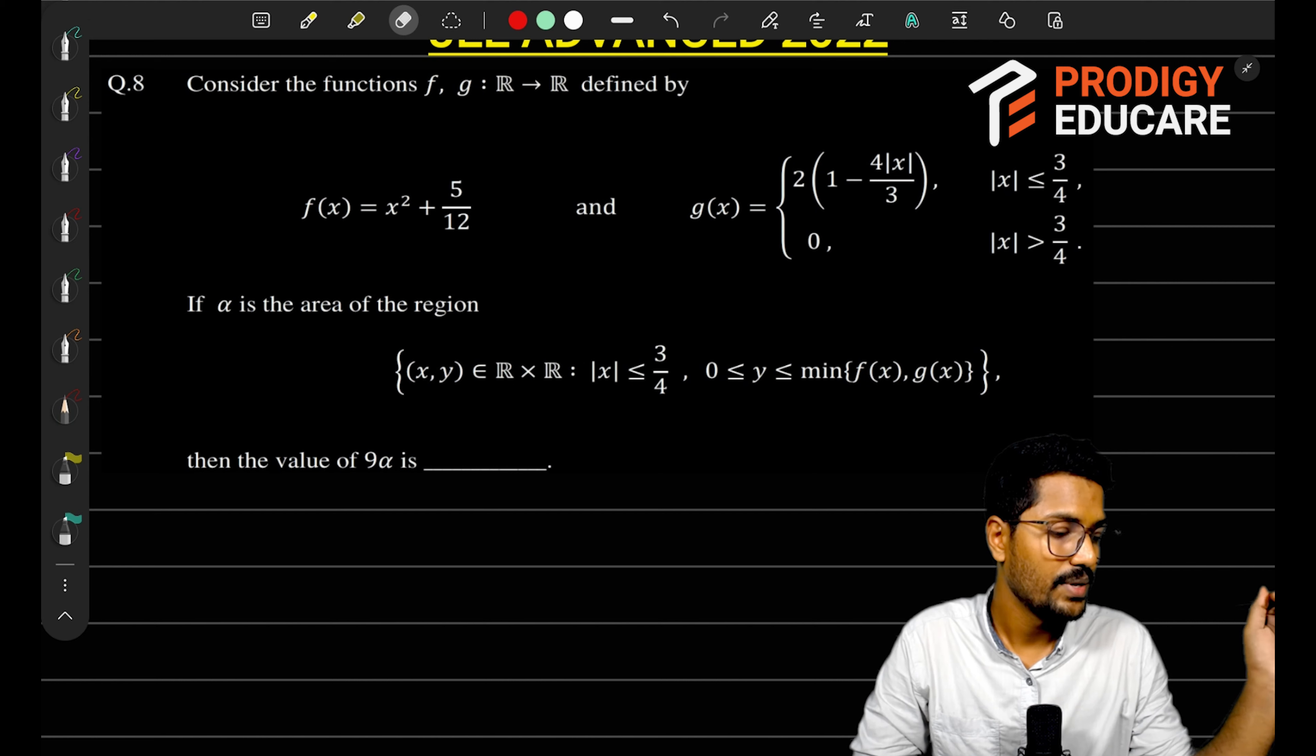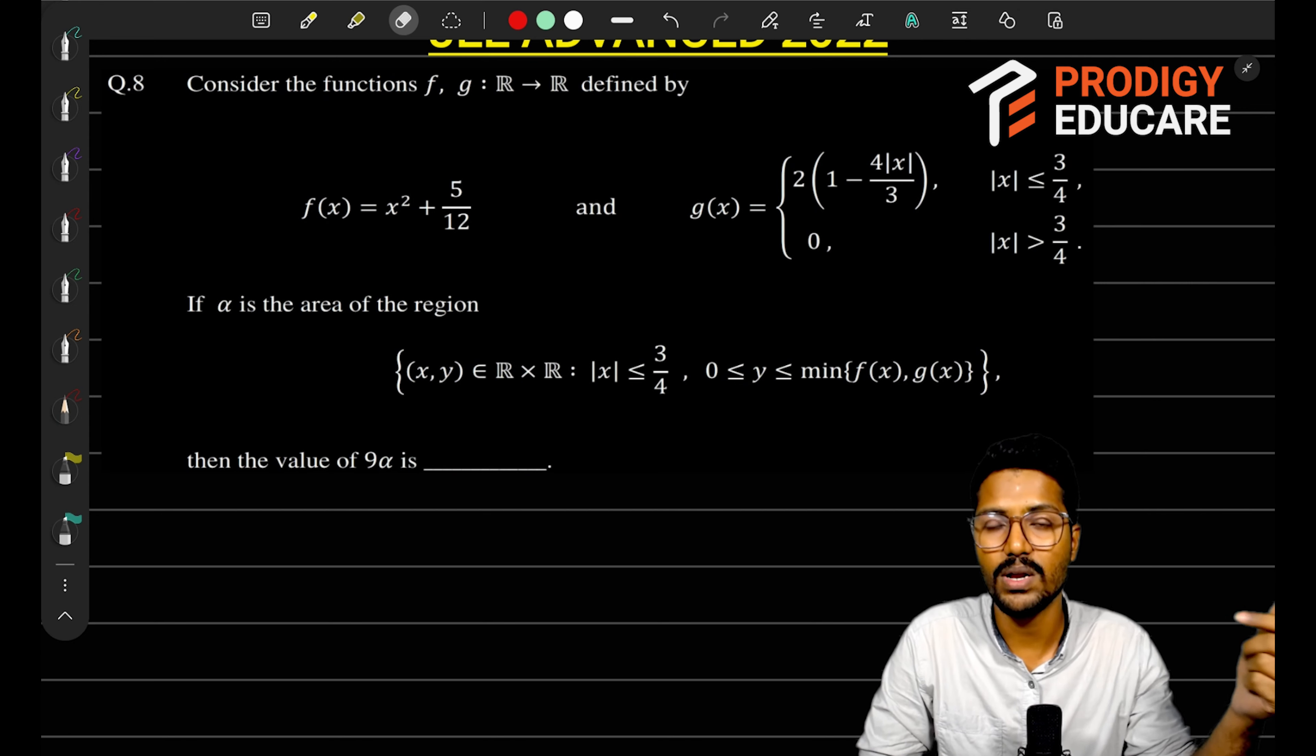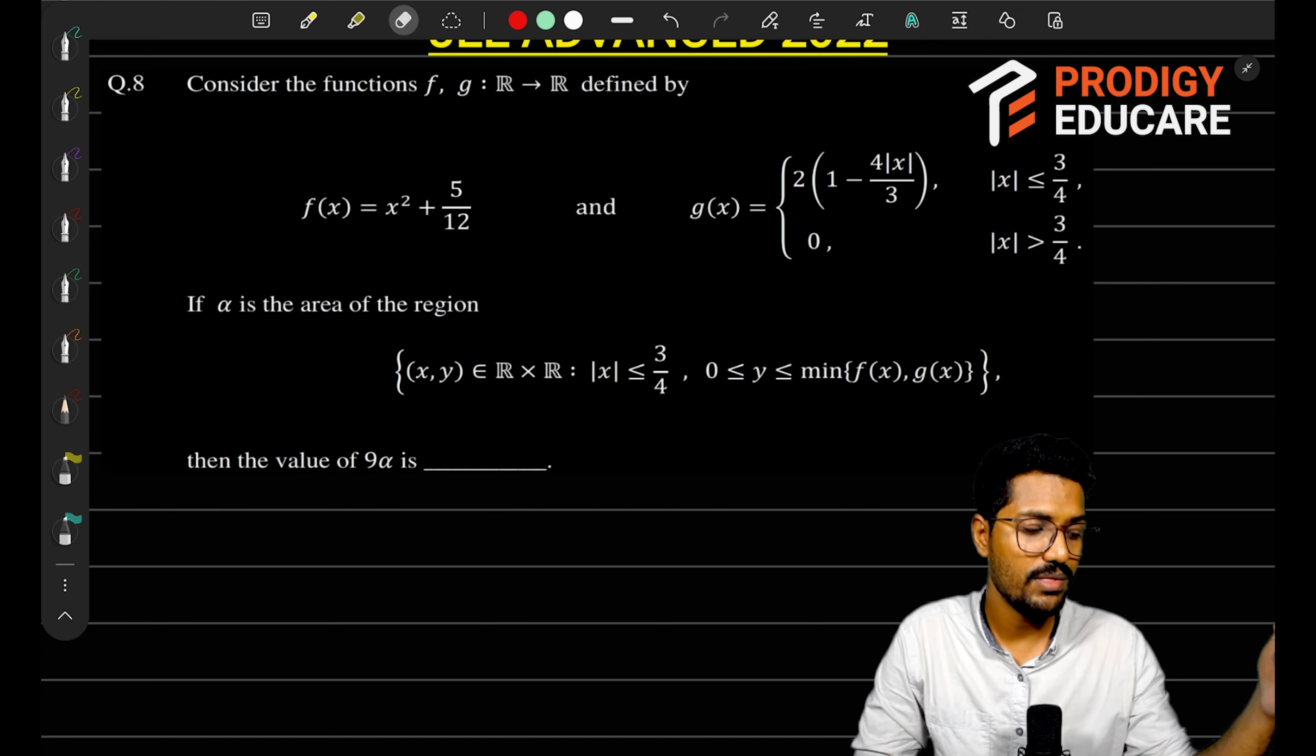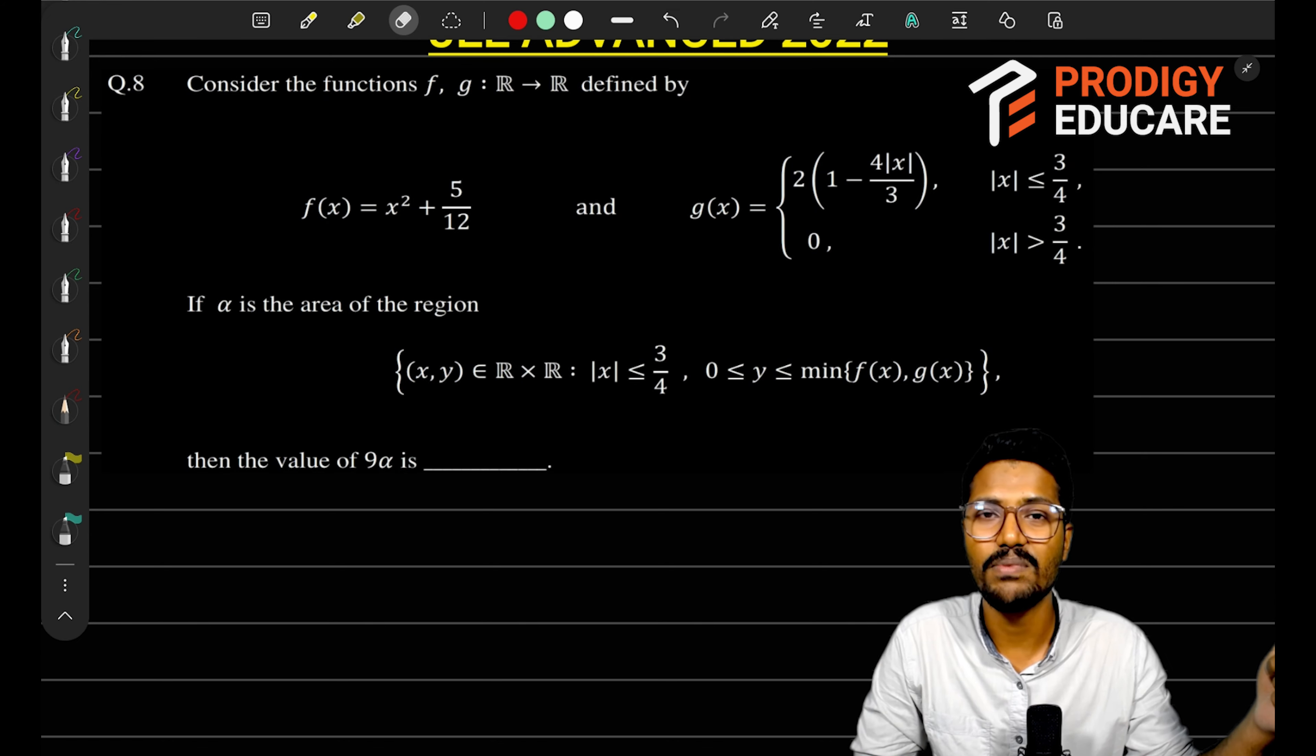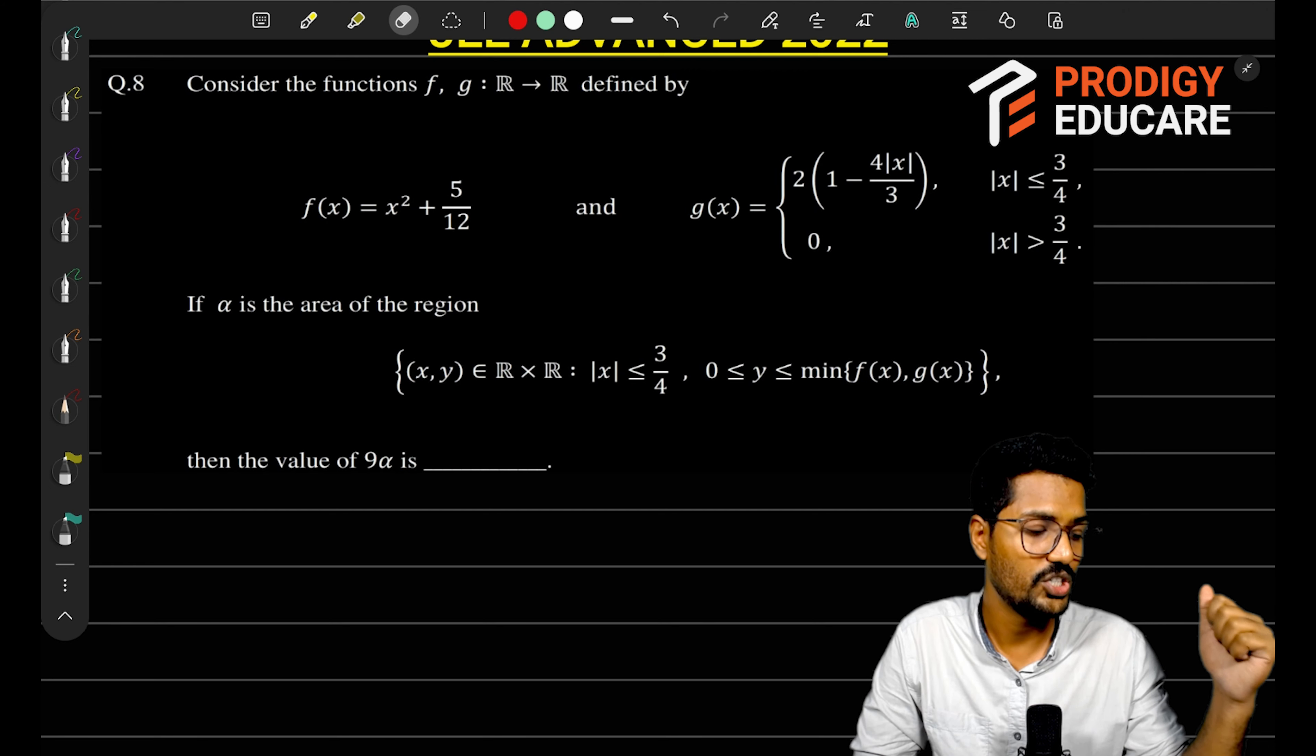Consider the functions f(x) and g(x), and we want to find the area of the region between them. Similar questions you have solved many times in advance. I don't know why they asked this question, but it is a very simple question that will be solved easily. If you are still unable to solve it, let's see how you can solve it.